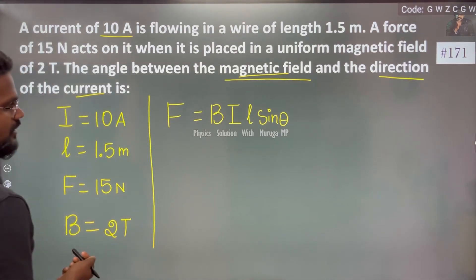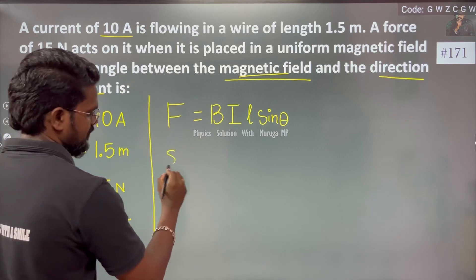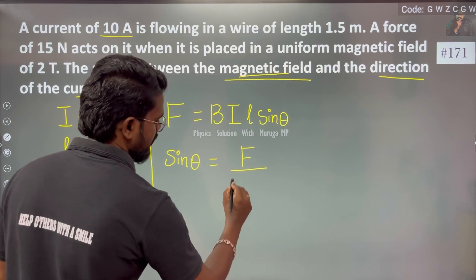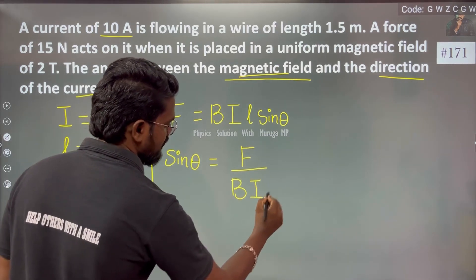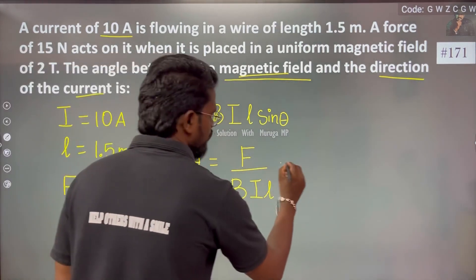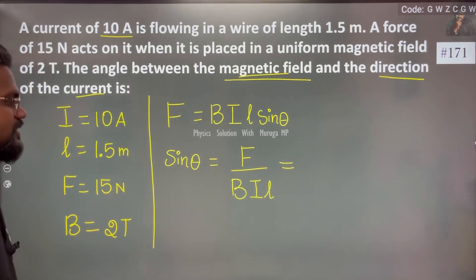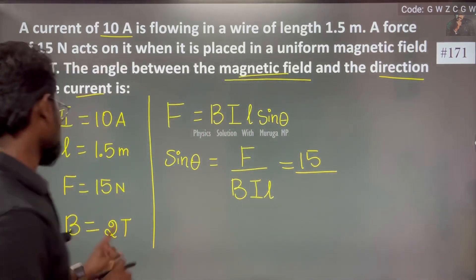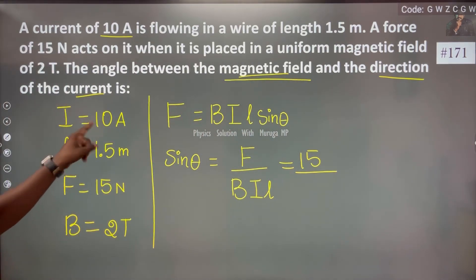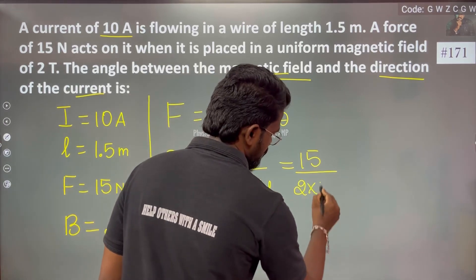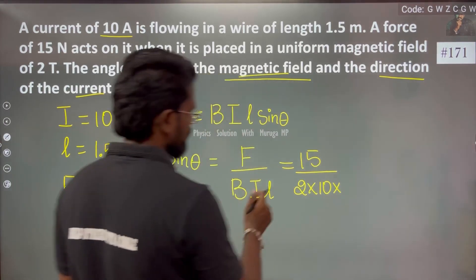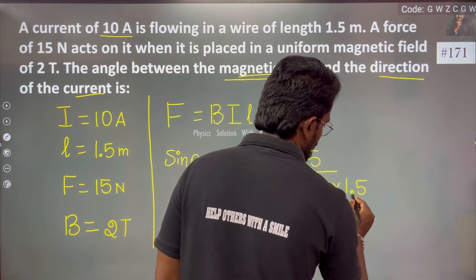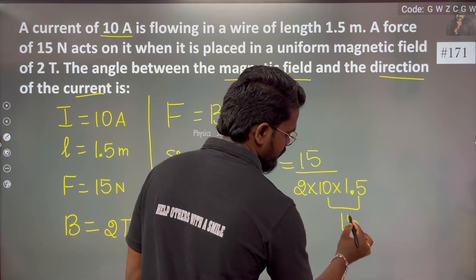Rearranging, sin theta = F divided by B I L. Substituting values: F is 15, B is 2, I is 10, and L is 1.5 meter. So sin theta equals 15 divided by (2 × 10 × 1.5), which simplifies to 15 divided by 30.